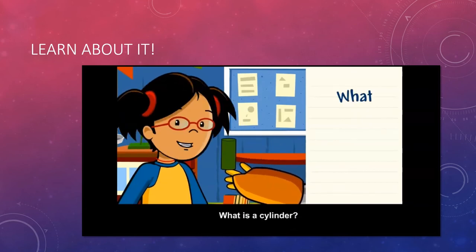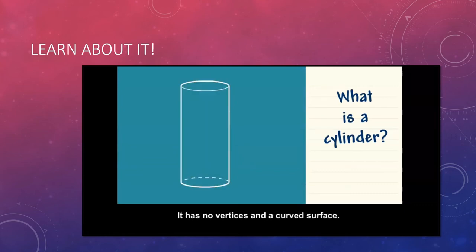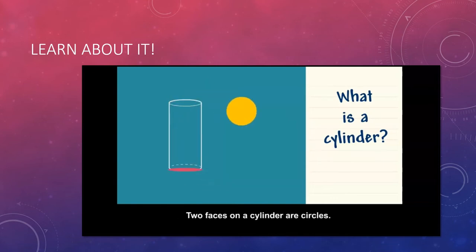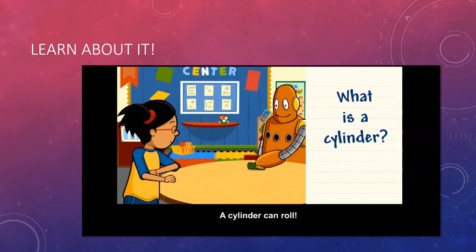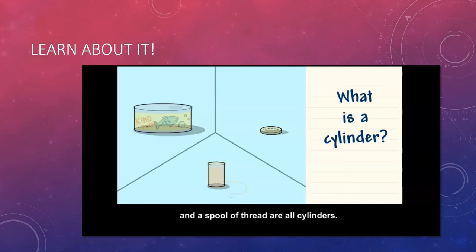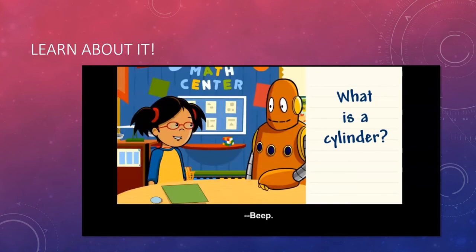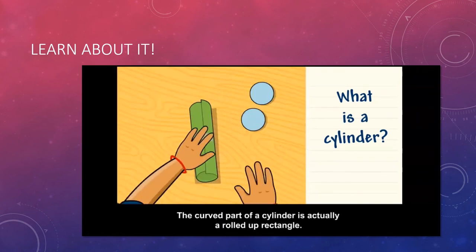What is a cylinder? It has no vertices and a curved surface. Two faces on a cylinder are circles. A cylinder can roll. A can of tuna, a penny, and a spool of thread are all cylinders. You know what's really cool? The curved part of a cylinder is actually a rolled-up rectangle.